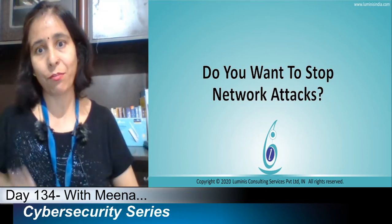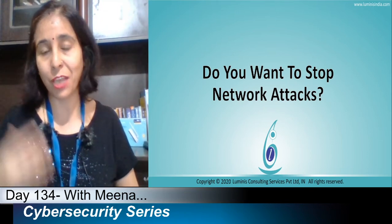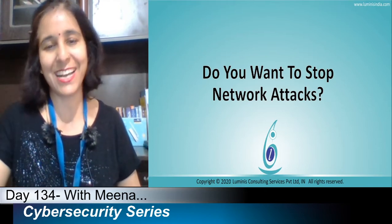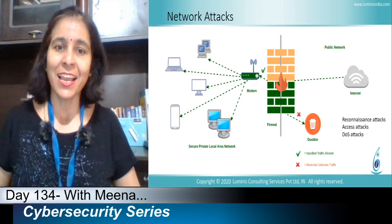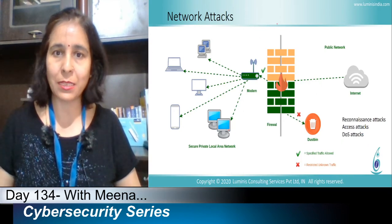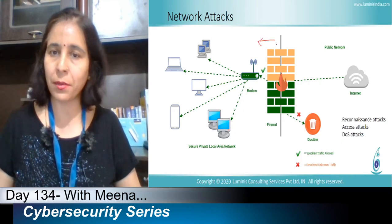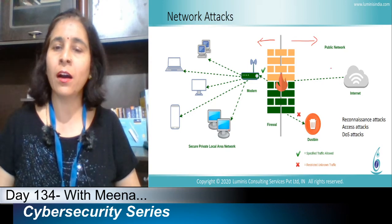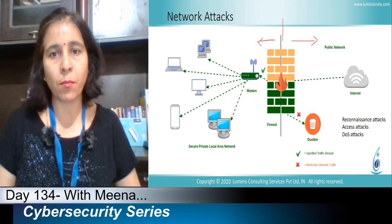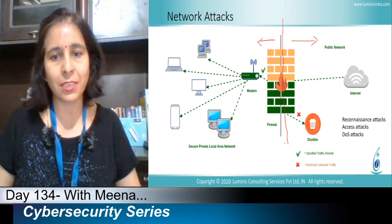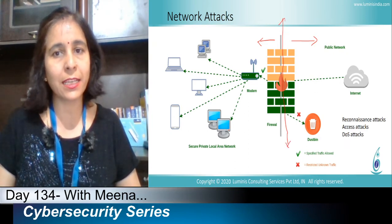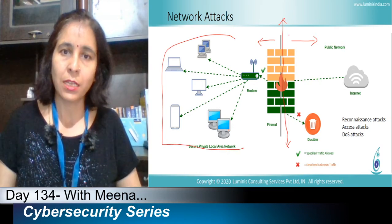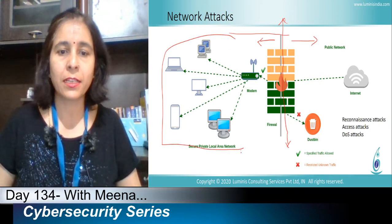We need to understand what type of network attacks attackers are performing, so that we can stop them. Here, for example, is the network of a company. It is connected with the public network, which is the internet. On the boundary of the company premises, where they start to protect their data from unauthorized access, they have implemented a firewall.